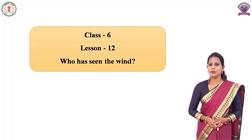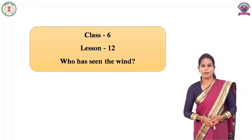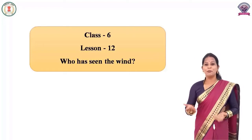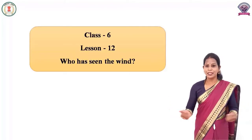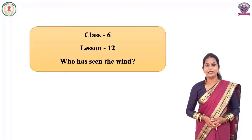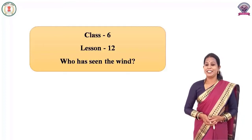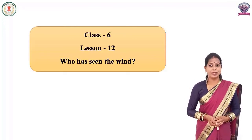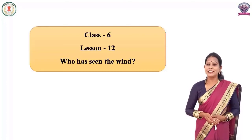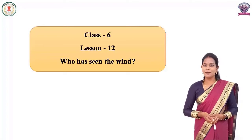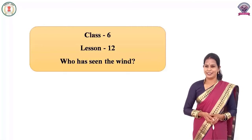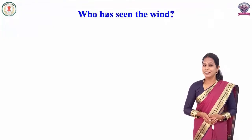Children, this poem is related to our environment and invisible phenomena. We know that all these invisible phenomena can be witnessed indirectly — we can only feel them. This invisible phenomenon means things we cannot see, like wind (हवा). Let us understand through this poem how wind makes us feel its presence. So let us start the recitation of this poem.